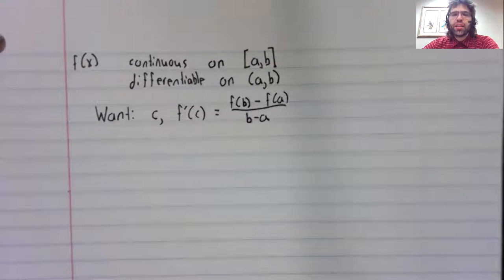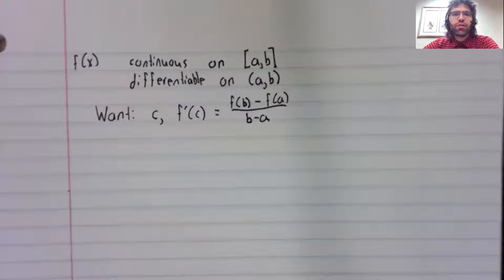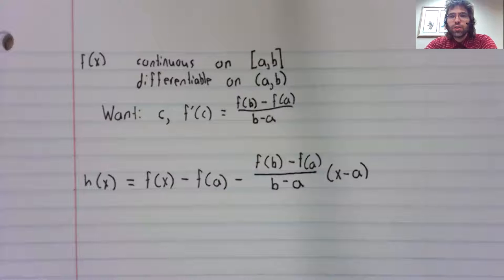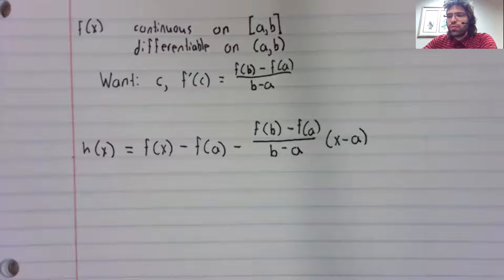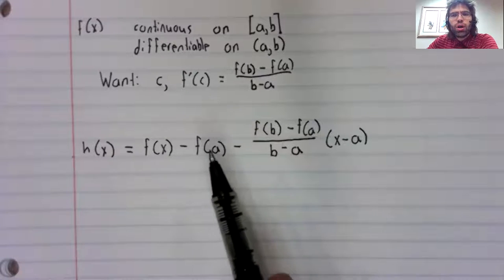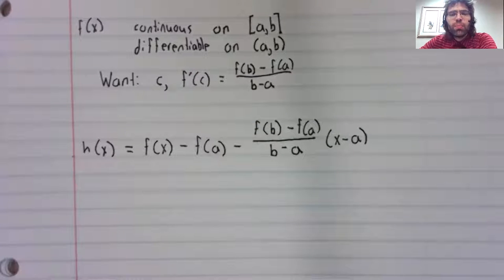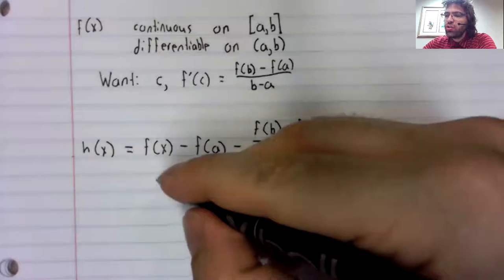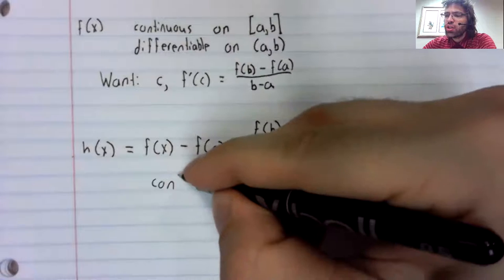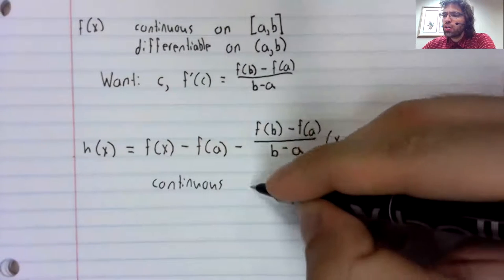So we're in the setting of the mean value theorem. We've got this continuous differentiable function. And what we're going to do is define a new function h of x. And this function may look a little complicated, but remember that functions built out of continuous functions are continuous.